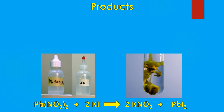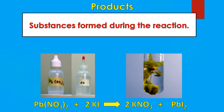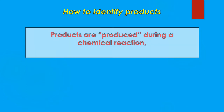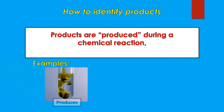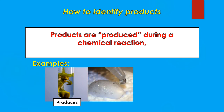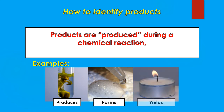On the flip side, we have what we call products. Products are the substances that are formed during the reaction — made from the reaction — and these are always going to be on the right side of the arrow. These are the substances that we end up with. How do we identify products? The products are what we say are produced in the reaction. Some examples of words that can help you identify products would be: produces, produced, forms, yields, gives, makes. All these are terms we can use to identify when we're talking about the products of a chemical reaction.